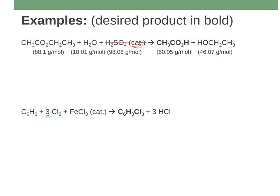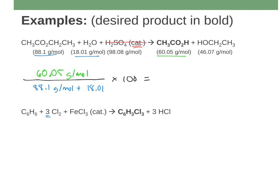Hopefully you gave that a try. For the first one, taking my desired product at 60.05 g/mol and dividing by the two reactants (not including the catalyst), times 100 — the atom economy for this one should be 56.6%. So a little more than half of the mass of the reactants ends up in our desired product. Not great — ideally we're going for 100% — but we have a way to measure that atom economy now.